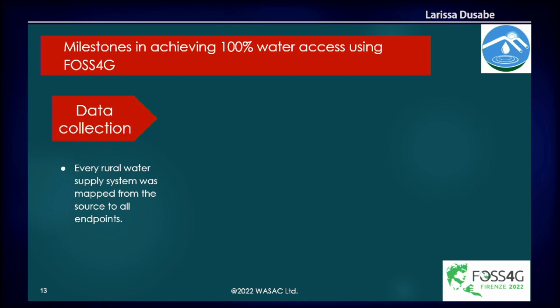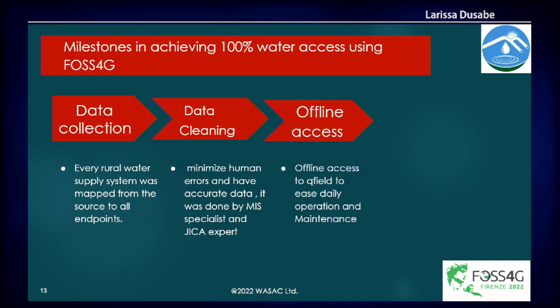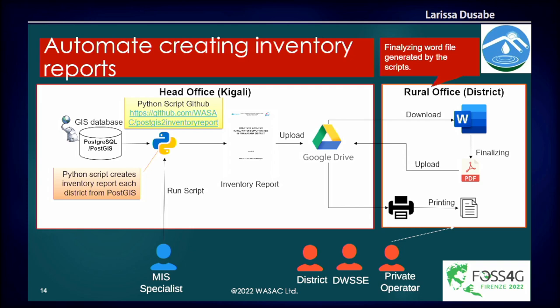What we managed to achieve: our water supply systems were mapped from source to end point. Data was cleaned to minimize human errors and facilitate hydraulic simulations. People — especially private operators — can have offline access for daily operation and maintenance. Offline data updating is available, making operation and maintenance easier. Monitoring and evaluation of water access was made easier, and decision-making organs are helped to plan accordingly. The system can generate inventory reports for each district to support effective decision-making.